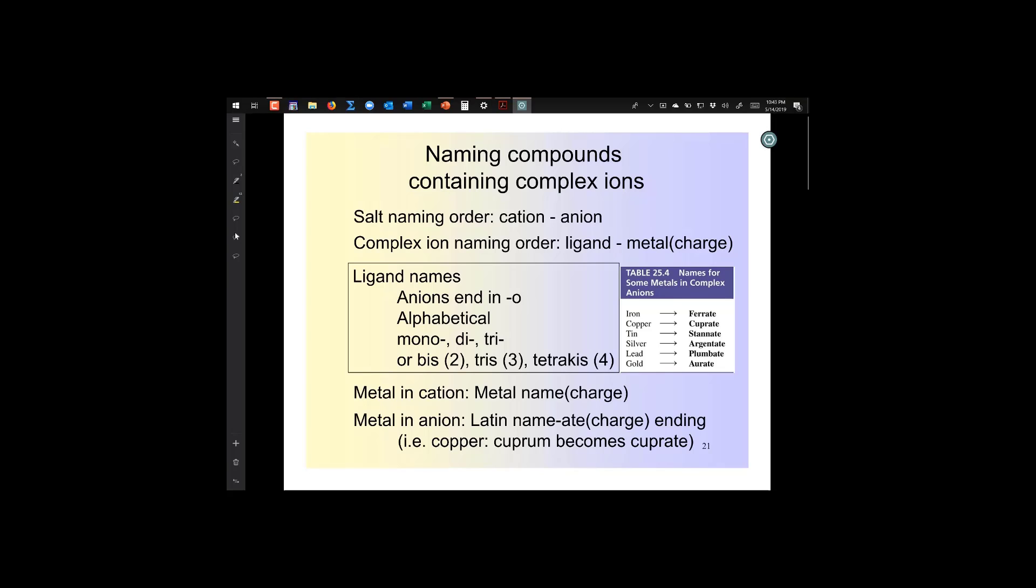I'm going to be going over naming a coordination compound. The coordination compound is a compound which contains at least one complex ion. When you do the nomenclature, it's very much like the IUPAC nomenclature you learned in Chem 1A. You name the cation first, then you name the anion. So sodium sulfate, you name sodium first and you name sulfate, the anion second.